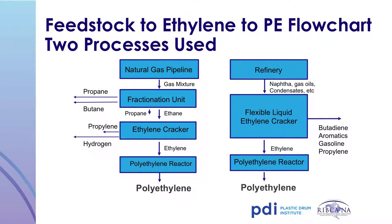The second methodology is mainly used in the Far East and Europe. In this process, the feedstock is typically naphtha, gas oil, or a similar refinery-based product. The feedstock is processed in an ethylene cracker, which results in ethylene, which is then polymerized in a polyethylene reactor. The final product from both processes is the same; the choice is based on the availability of the base material — natural gas or refinery-based feedstock.